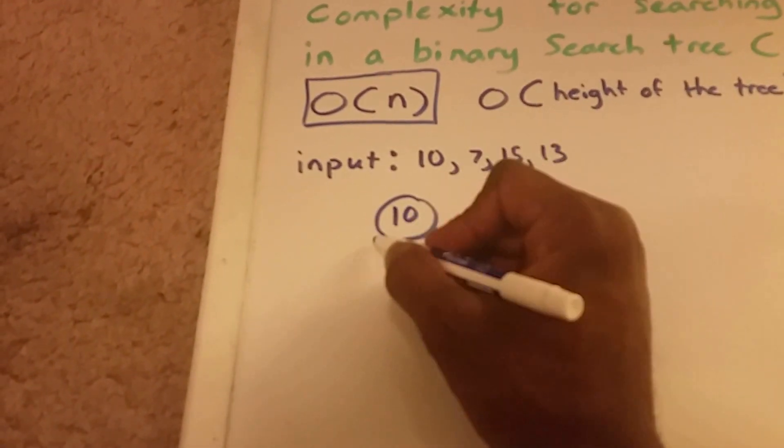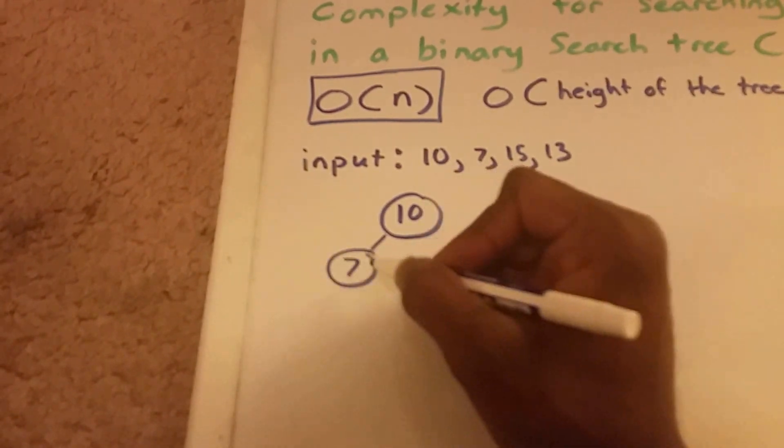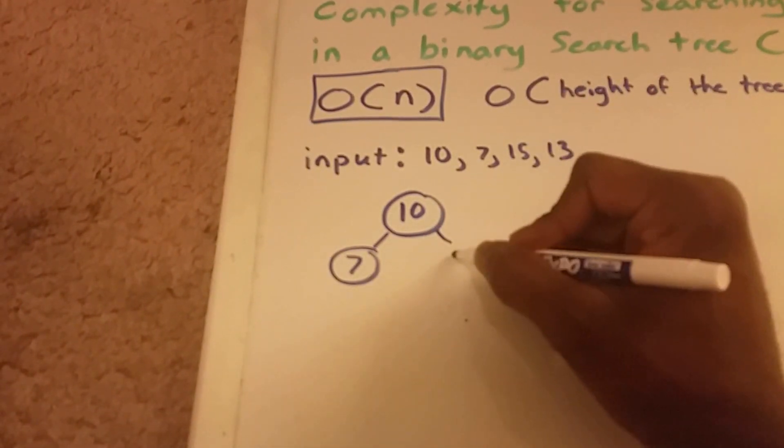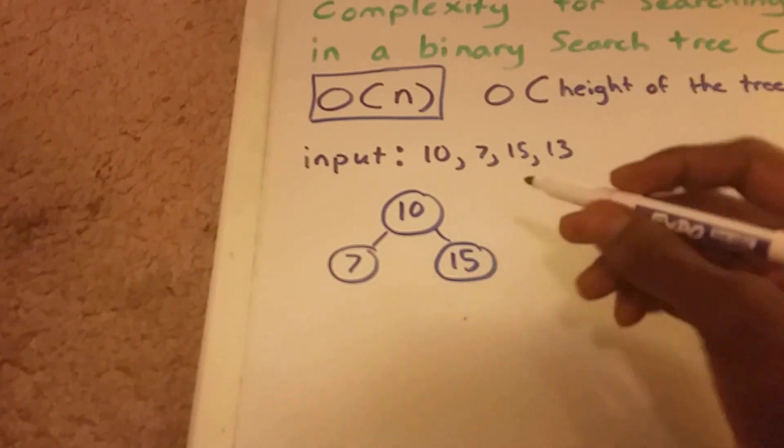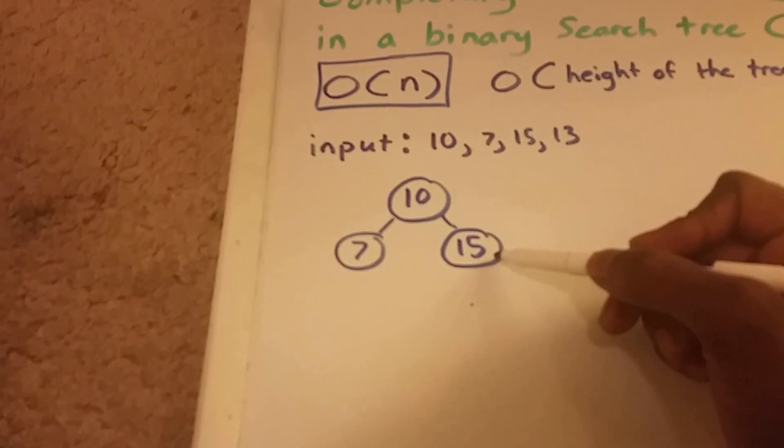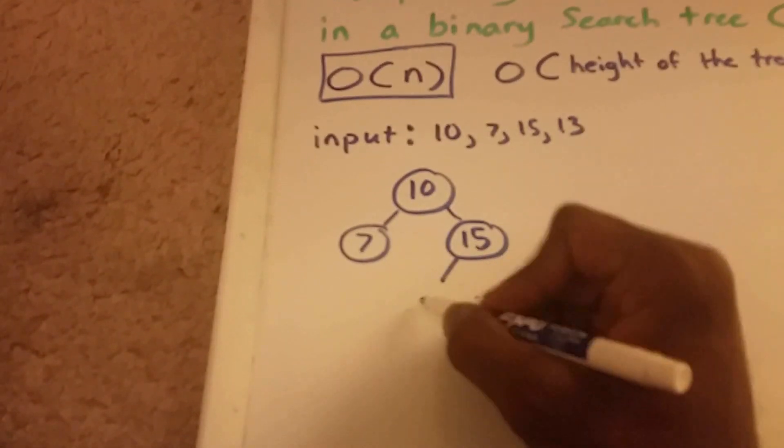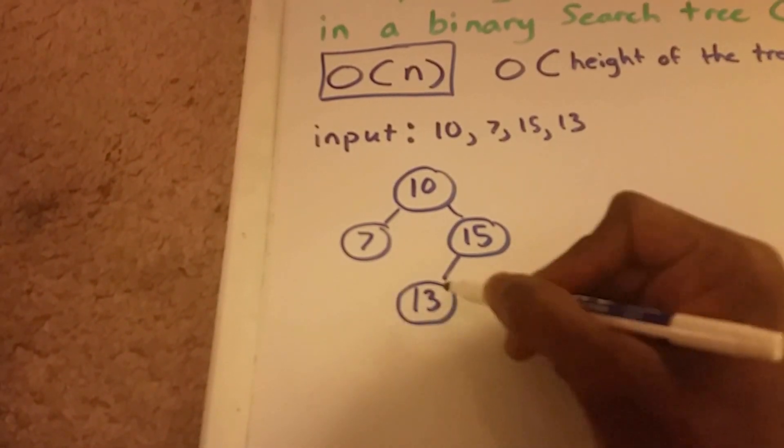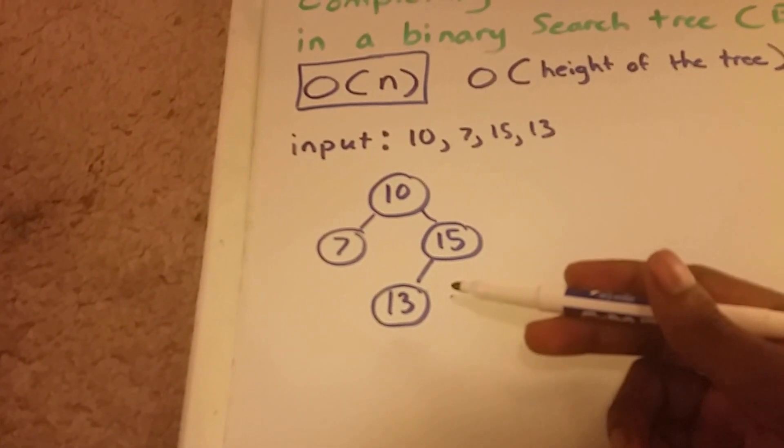We have 10. 7 is less than 10, so 7 goes over here to the left. 15 is greater than 10, so it goes over here to the right of 10. 13 is greater than 10, so it goes to the right of 10. And 13 is less than 15, so it goes to the left of 15. And this gives us a binary search tree structure.